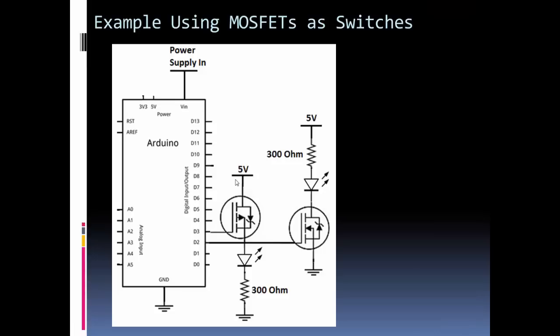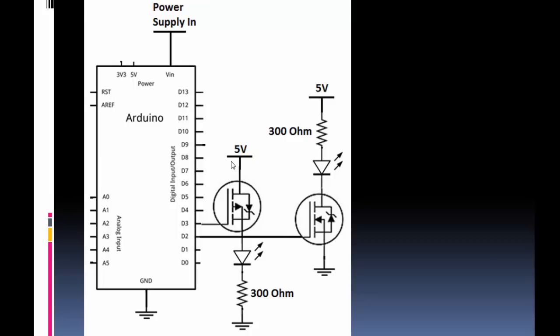For my example, I'm going to demonstrate it using an Arduino. I have one pin connected to a P-channel, and that's the one closest to the Arduino. Then I have another pin connected to my N-channel gate. Remember, for the N-channel, we typically want to have the source connected to ground because we want to bring the gate to a higher potential than ground.